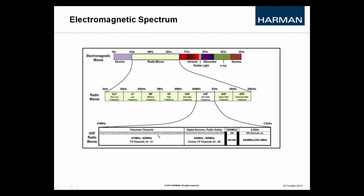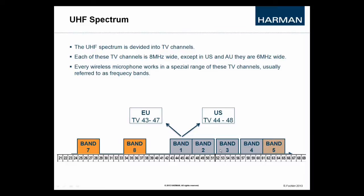To take a closer look on those, we take a look on to the next slide. Again, here we have our TV channels. The TV channels used for professional wireless microphones range from TV channel 21, which is about 470 MHz in relation to channel 69, which would refer to 860 MHz.